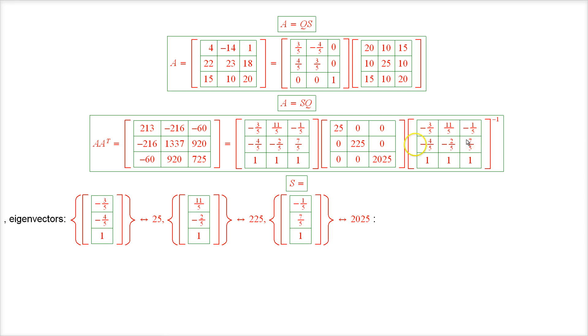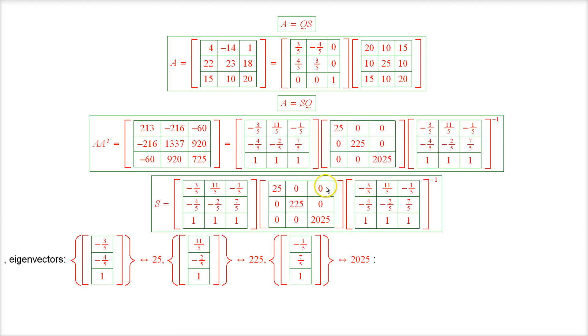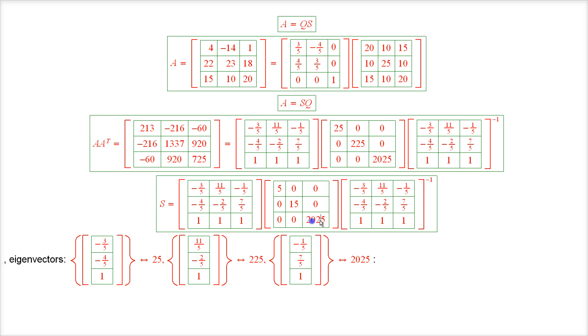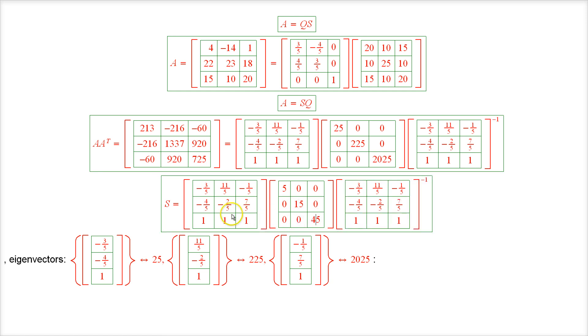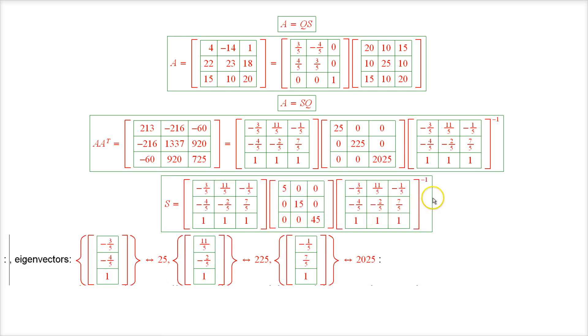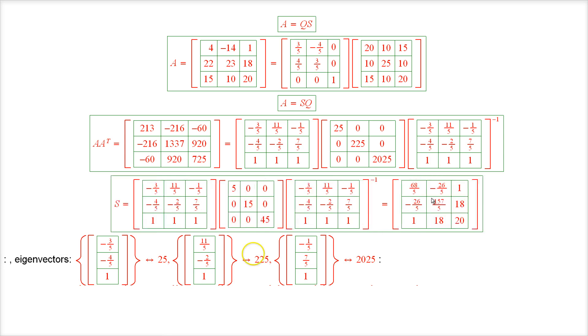So the matrix S will have the same form except we'll have the square roots on the diagonal. In other words, 5, 15, and 45. So here comes the matrix S. Okay, we have our symmetric matrix S.